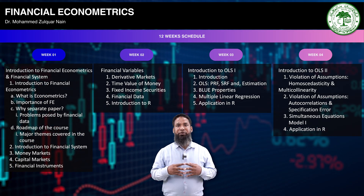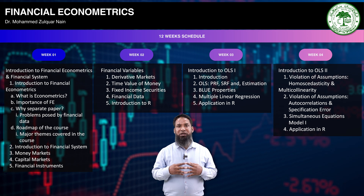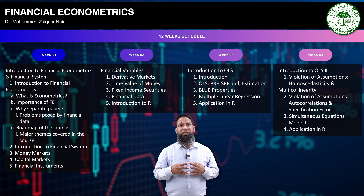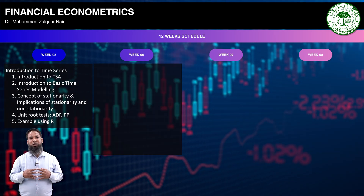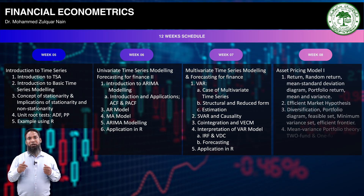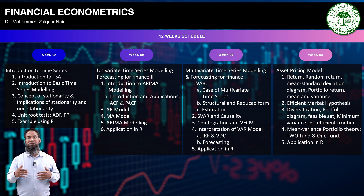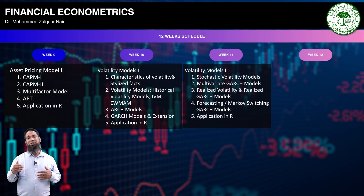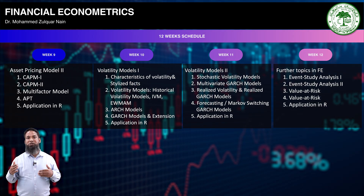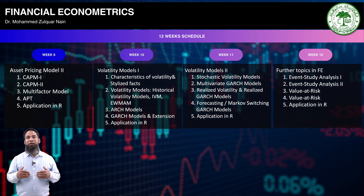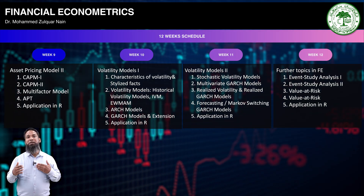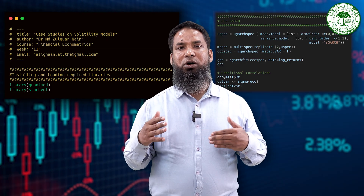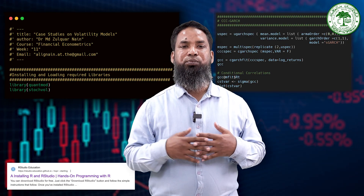This course begins with the fundamentals of econometrics and the financial system. From there, we explore financial variables, univariate and multivariate time series analysis, and advanced volatility models such as ARCH and GARCH. The course also discusses models such as event study analysis and value at risk, which analyze the impacts of events on the financial performance of asset prices and firms, and are used to measure the risk of loss. A unique characteristic of this course is the combination of theoretical insights with hands-on applications using the popular and free software R.